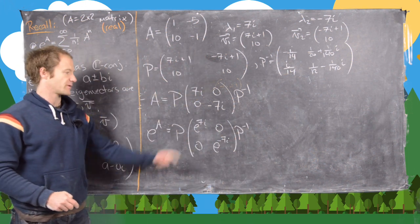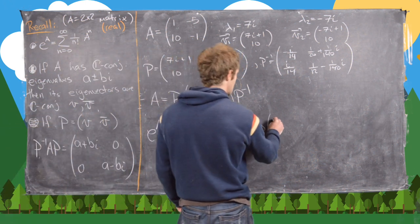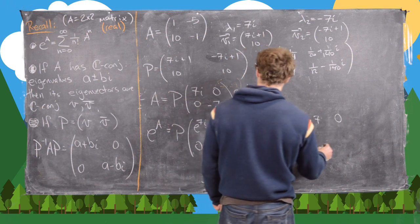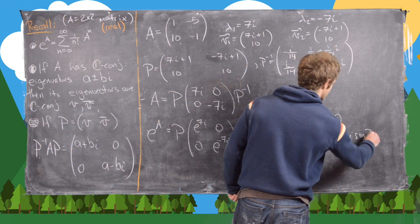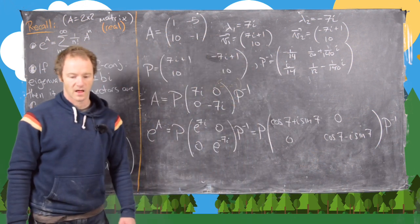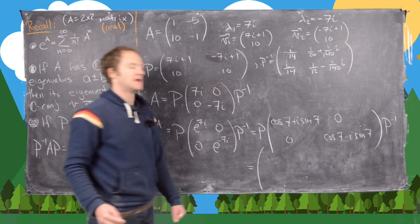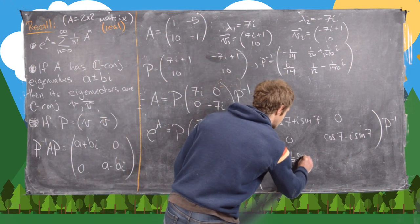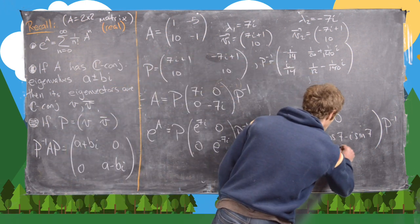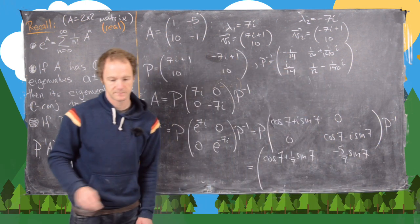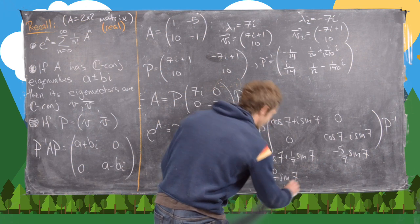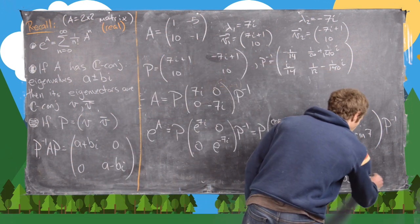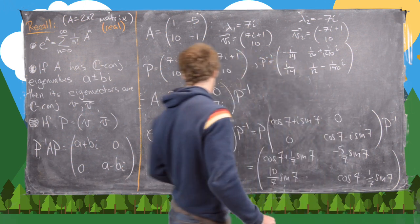Applying Euler's formula, e to the 7i becomes cosine of 7 plus i sine of 7, and e to the negative 7i becomes cosine of 7 minus i sine of 7. Multiplying out P and P inverse carefully, the final result for the matrix exponential is the real matrix with entries: cosine 7 plus one-seventh sine 7, negative five-sevenths sine 7, ten-sevenths sine 7, and cosine 7 minus one-seventh sine 7. That is the matrix exponential of our original matrix A.